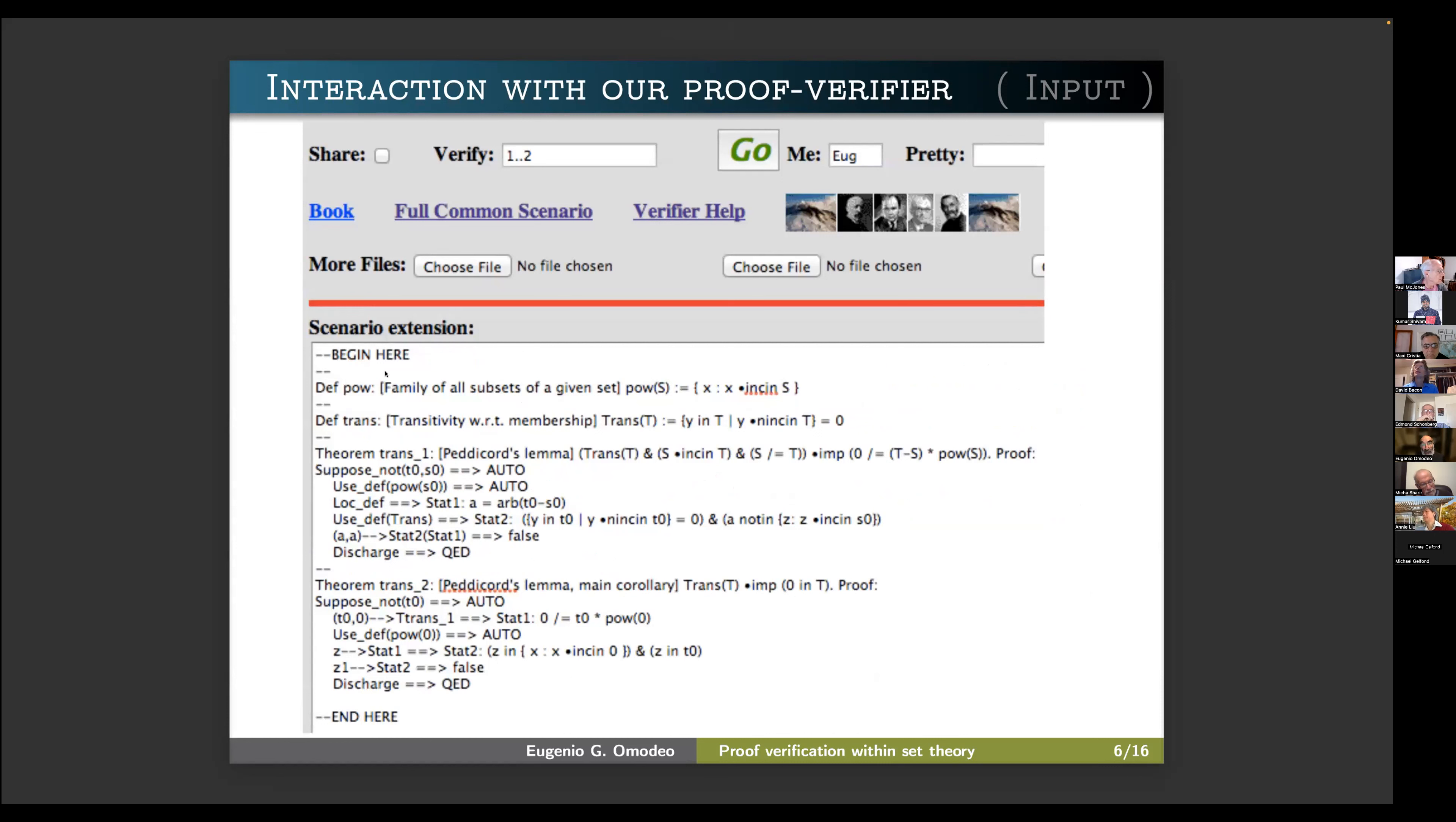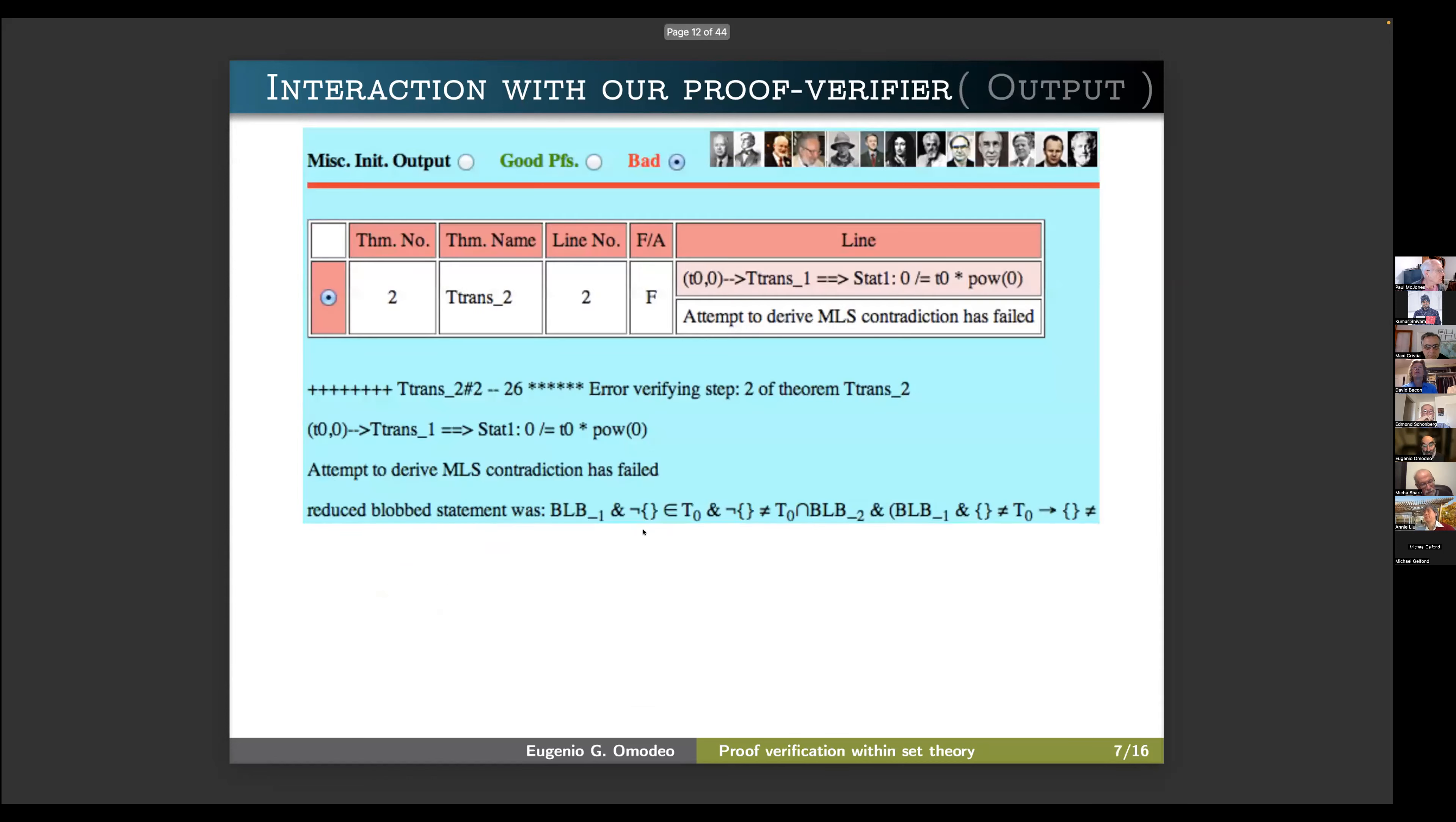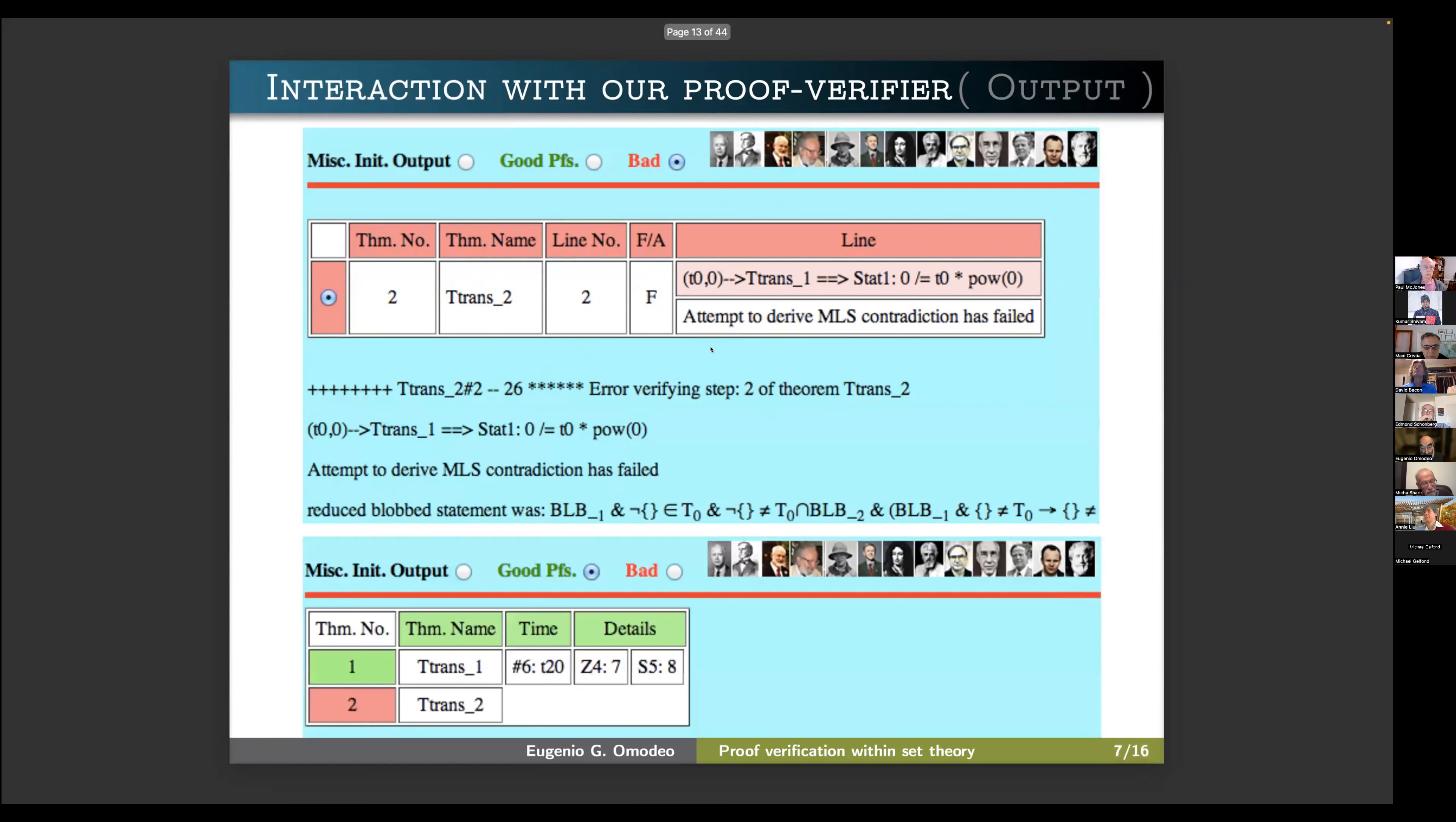When one submits a scenario, which means, by scenario, I mean a proof script to Etna Nova, one gets the result in this form. It's a sheet in which you find the mistakes, which are in your proof. And you also find the indication of how much time has been spent in checking the correctness of the steps of a theorem. So here, two theorems have been proved, one was correct, and its proof verification took 20 milliseconds. And in the other case, there was a mistake in the proof, and the time is not reported because it was negligible.